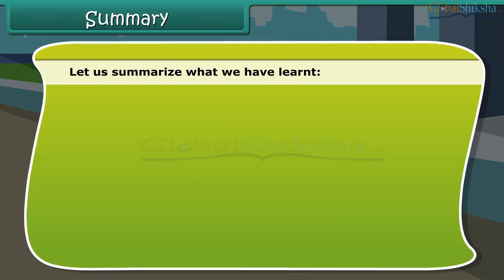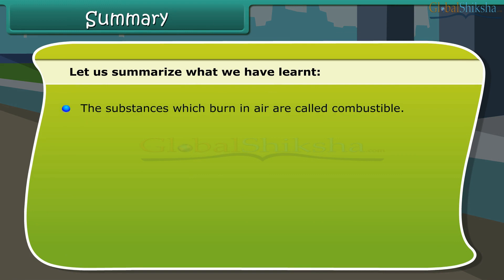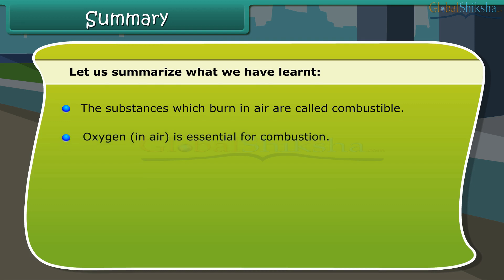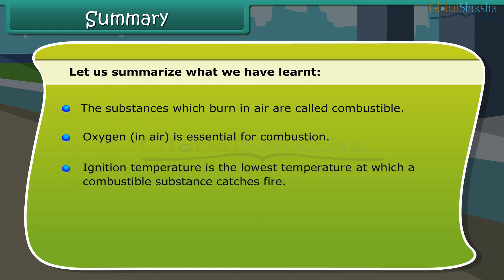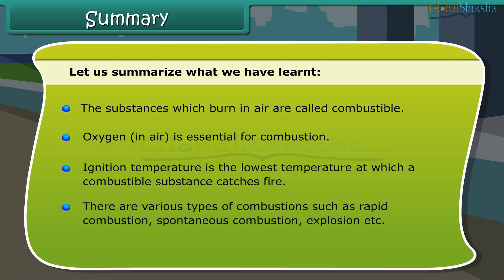Let us summarize what we have learned. Substances which burn in air are called combustible. Oxygen in air is essential for combustion. Ignition temperature is the lowest temperature at which a combustible substance catches fire. There are various types of combustion such as rapid combustion, spontaneous combustion, explosion, etc.